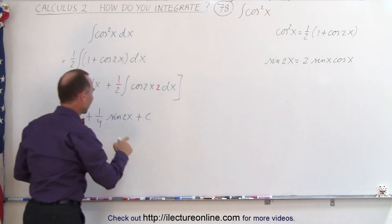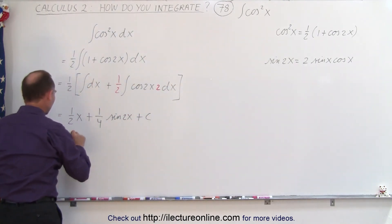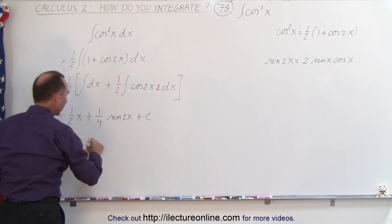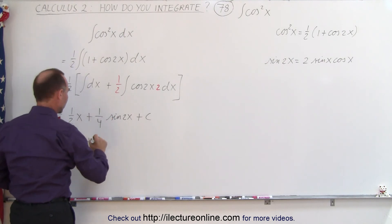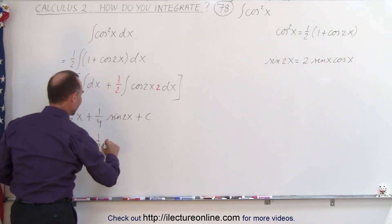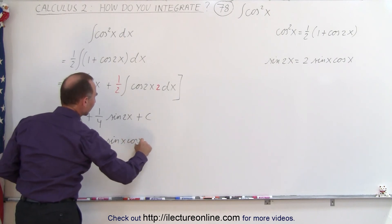When we use that identity, then this can be written as 1 half x, plus 2 times 1 quarter is 1 half, times the sine of x, cosine of x,